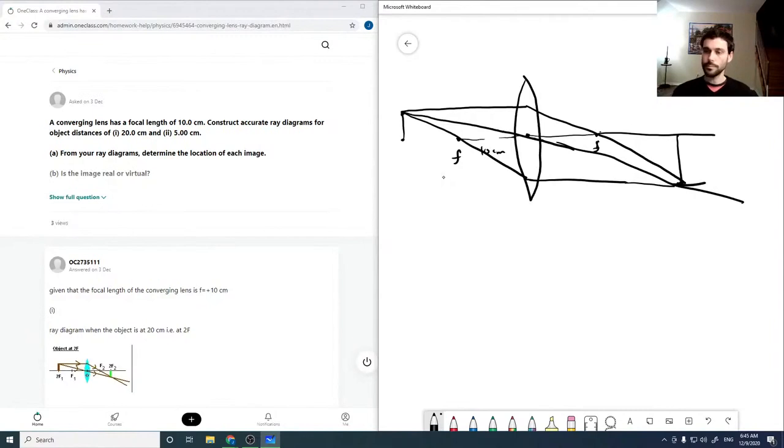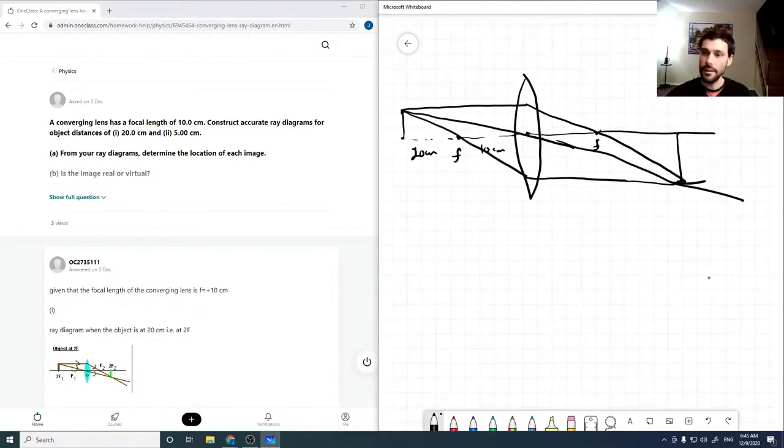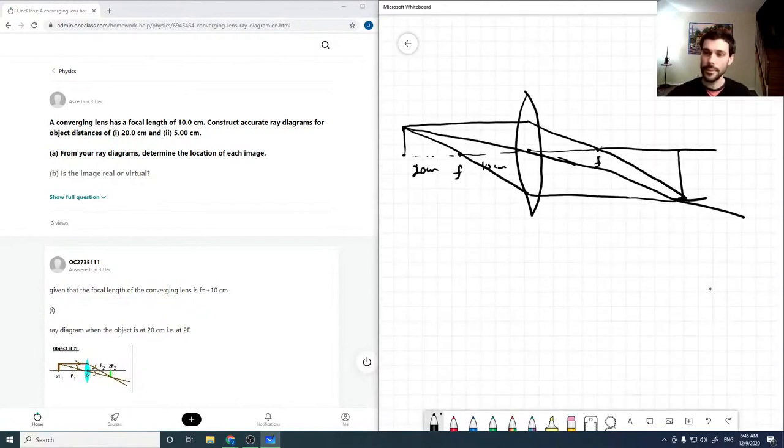And so, because of my poor drawing skills, then it comes out there. So it wants us to determine the location from the ray diagram. So, I mean, from this it looks like if this is 20 centimeters, then it looks like it's a bit more than 20 centimeters, but I would assume that because of the magnification that is obviously happening on the right side here, that it's going to be at 20 centimeters.